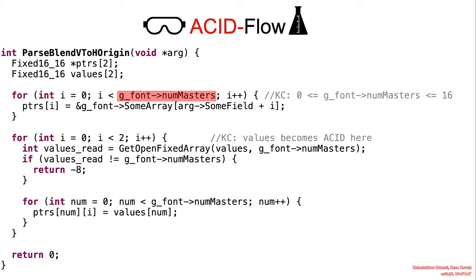The first for loop iterates through the pointers array using the value index from zero to numMasters. Although not shown here, numMasters is known to take values from the range zero to 16.